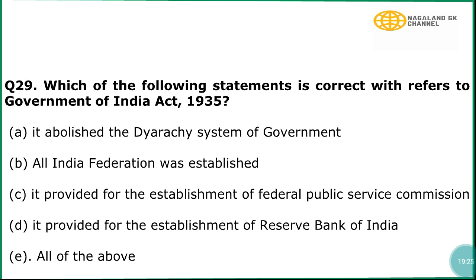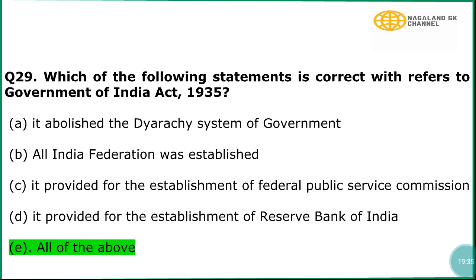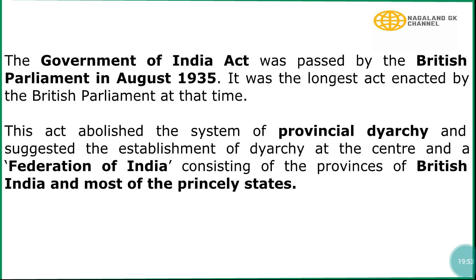Question number 29: Which of the following statements is correct which refers to the Government of India Act 1935? The correct answer is option number E, all of the above — it abolished the Diarchy system of government, the All India Federation was established, it provided for the establishment of a Federal Public Service Commission, and it provided for the establishment of a Reserve Bank of India. In explanation, the Government of India Act was passed by the British Parliament in August 1935 and was the longest act enacted by the British Parliament at that time. This act abolished the system of provincial Diarchy and suggested the establishment of Diarchy at the Centre and a Federation of India consisting of the provinces of British India and most of the princely states.